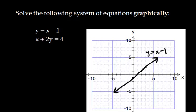I'm going to graph my second equation using intercepts. So remember to find your x-intercept, you set y equal to 0. So I've got x plus 2 times 0 equals 4. And that gives me an x-intercept of x equals 4. So that is right here.